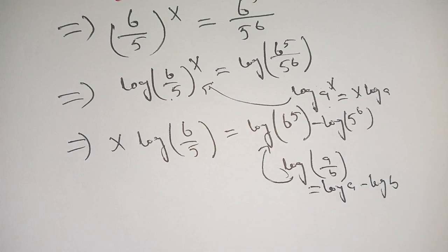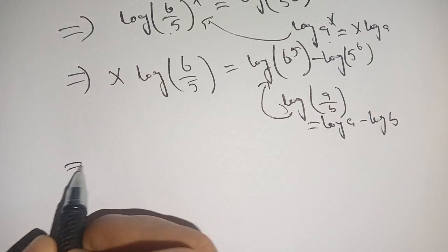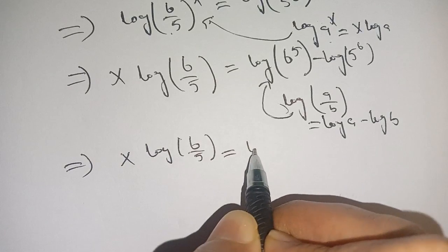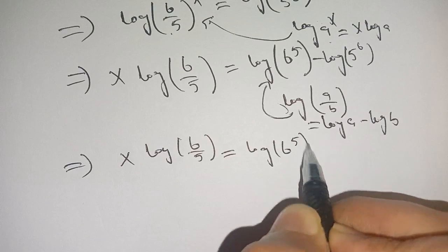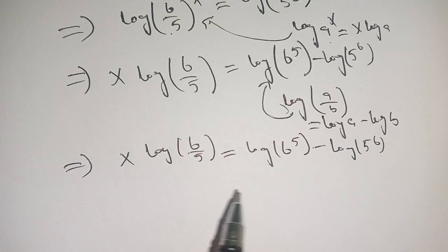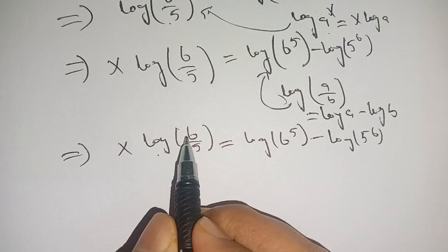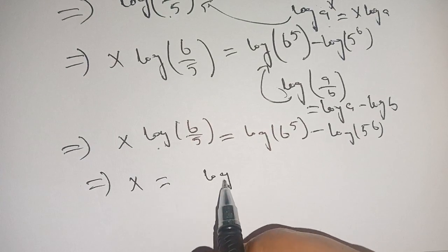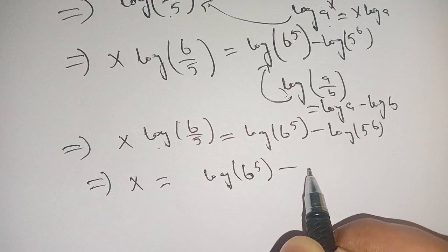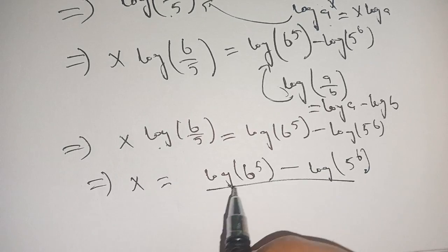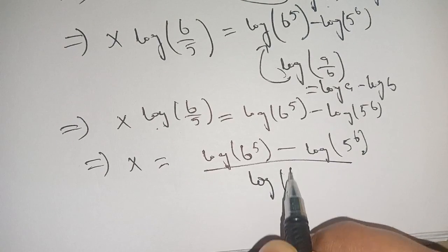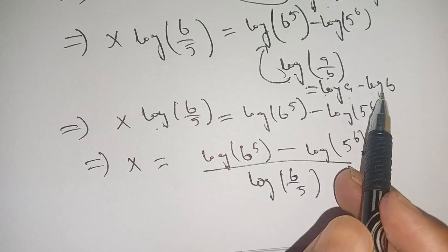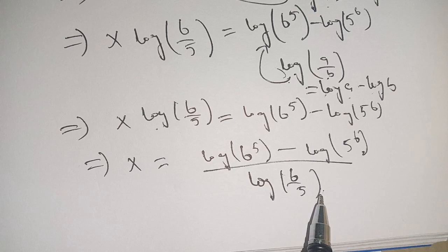We use this identity on the right-hand side. Our equation becomes x·log(6/5) = log(6^5) minus log(5^6). On dividing both sides by log(6/5), we get x = [log(6^5) minus log(5^6)] divided by log(6/5). We know that log(a/b) = log(a) minus log(b); we use this identity on the denominator.